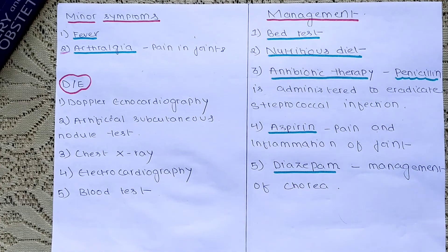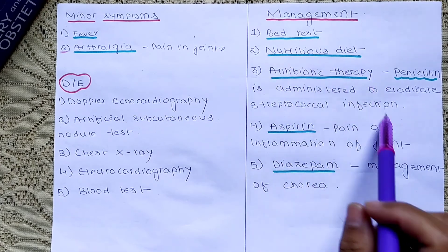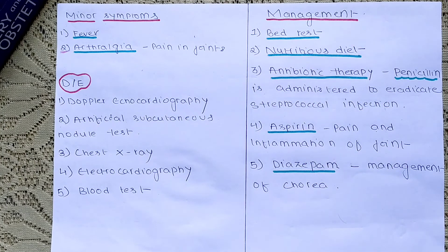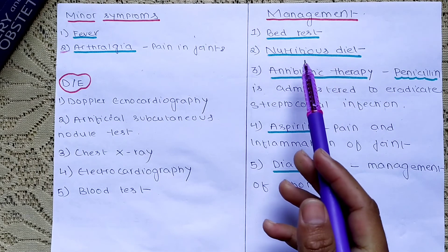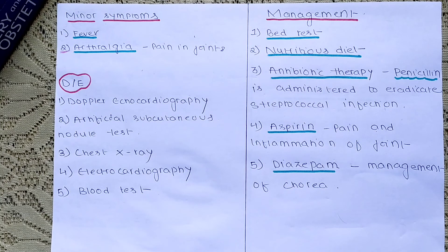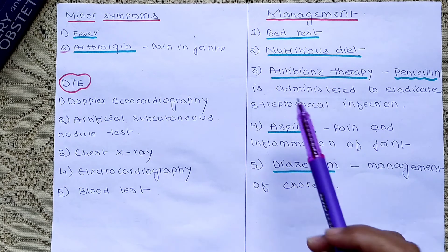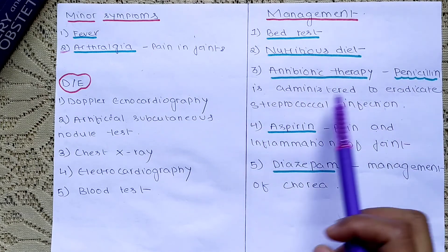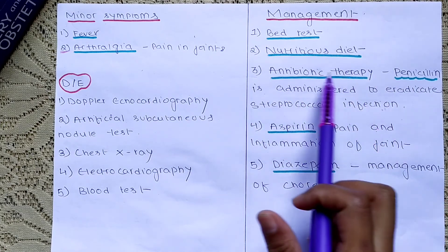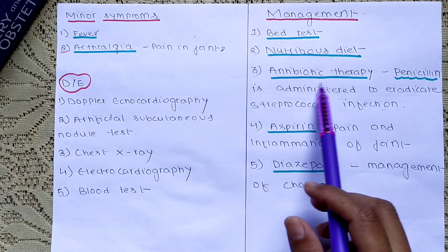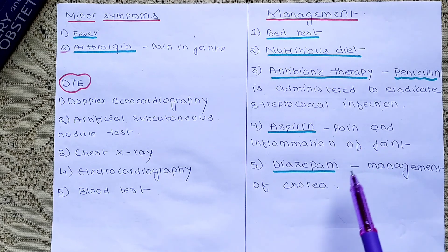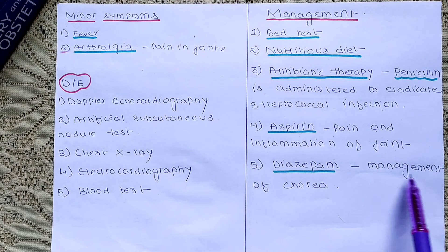Management of rheumatic fever includes bed rest, which is very important, and a nutritious diet — we should avoid spicy food and include a protein-rich diet with adequate nutrients. Antibiotic therapy with penicillin is administered to eradicate streptococcal infection. Aspirin is used for pain and inflammation of joints, and diazepam is used for management of chorea.